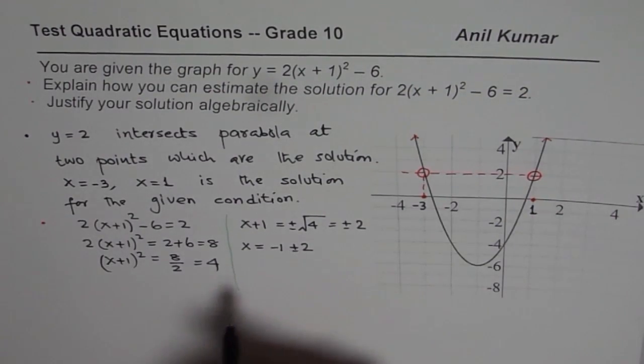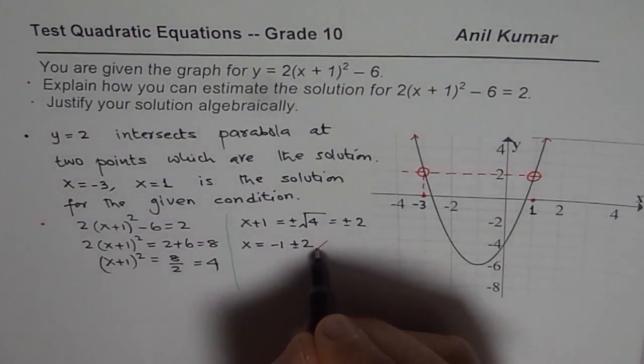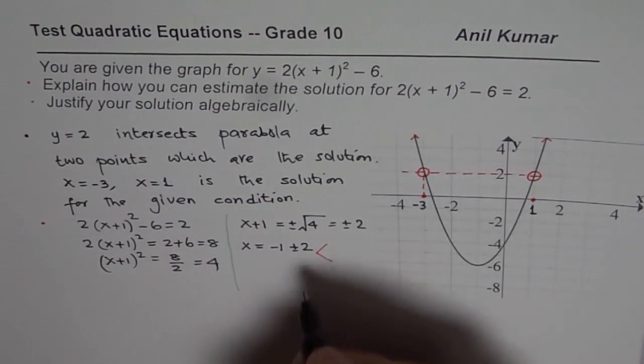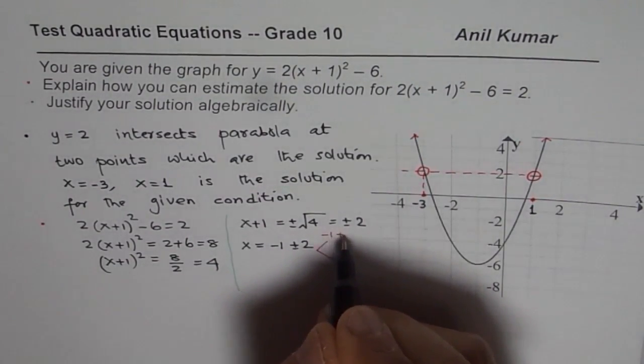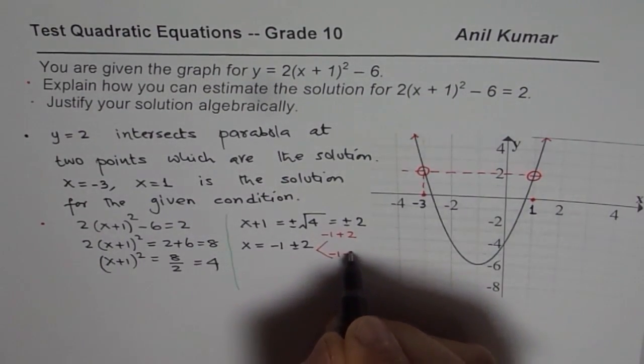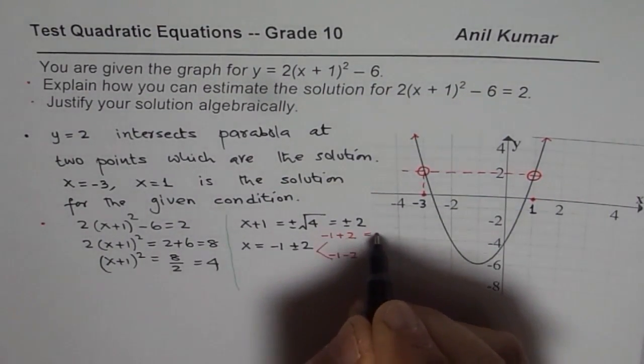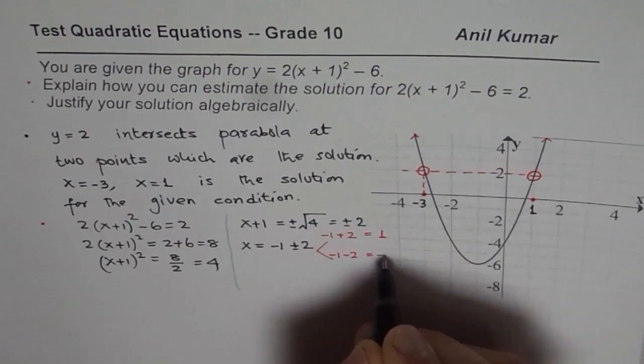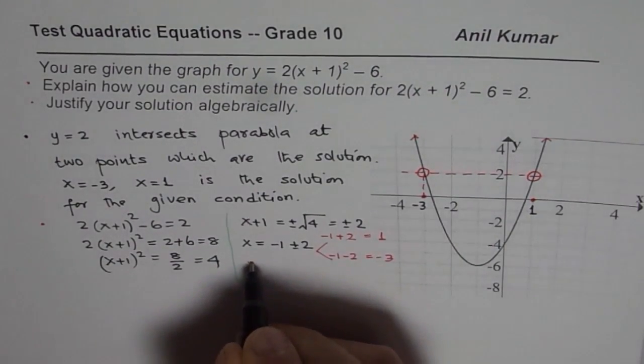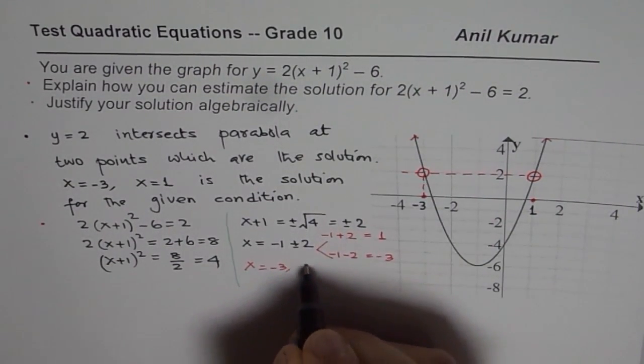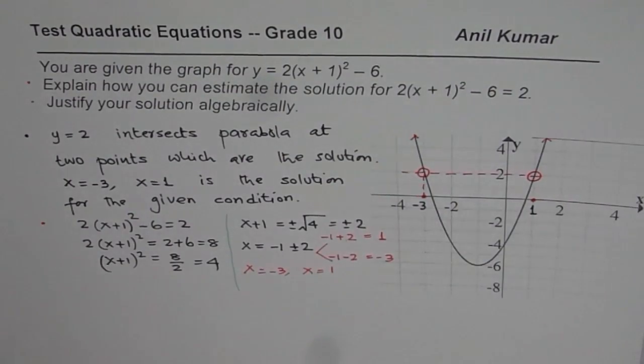So if you take plus value, then you get one solution, which is, let me write down here, -1 + 2, and the other value is -1 - 2. And that gives you 1, and this gives you -3. So we get x equals to -3, and x equals to 1 as our solution, just as we found it earlier.